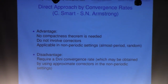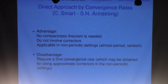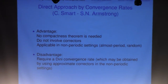The disadvantage is that this approach will require a convergence rate — even though you only need a Dini rate, a quite weak Dini rate. In practice, this convergence rate can be established by using so-called approximate correctors. We'll talk a little toward the end about what approximate correctors are in an almost periodic setting.